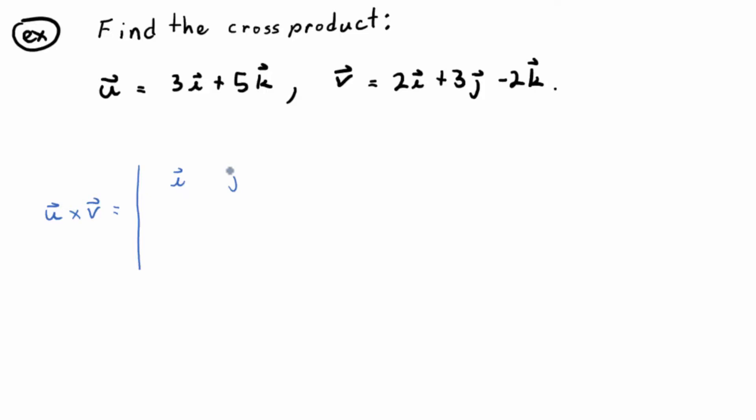So i, j, k. What's the middle row? 3, and then there is no j component, so the j component is 0. When you don't see a j component, it's 0. So 3i plus 0j plus 5k. Just 3, 0, 5. And then the third row? 2, 3, negative 2.